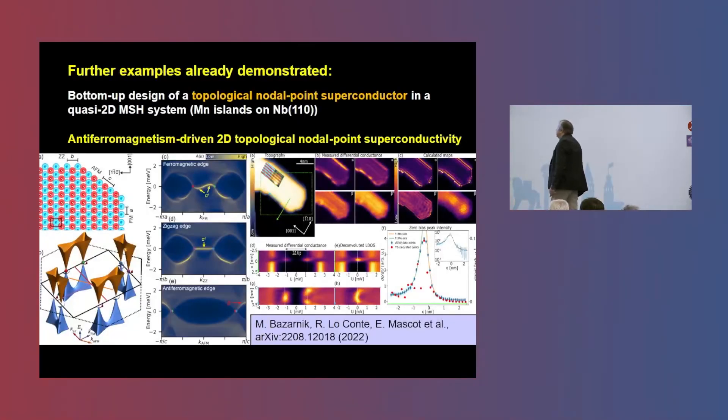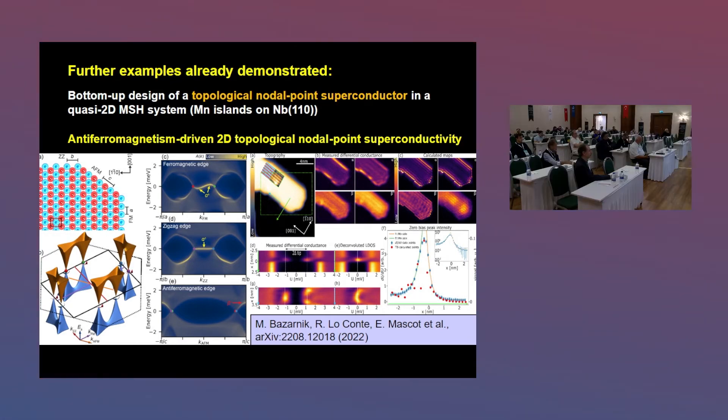You can go on and look, for instance, for topological nodal point superconductivity, as has also been theoretically predicted. In this case, you can just go for manganese islands, which have an antiferromagnetic ground state, and interacting with a superconducting niobium substrate, in this case.